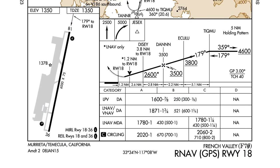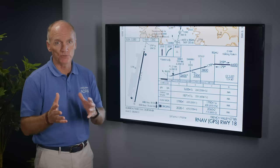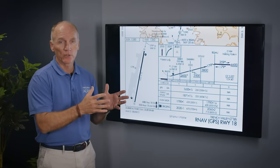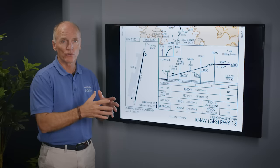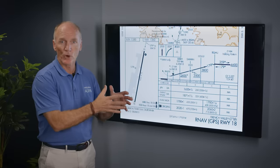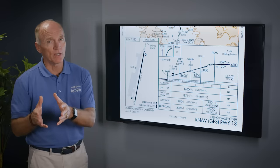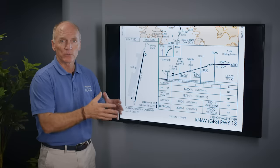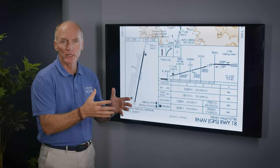According to reports from the media, the weather was reported as 300 and a half mile visibility going into French Valley. Now it depends on what kind of rules the pilot was flying under. If he was flying under Part 135, it's illegal to attempt an approach without having the minimum weather needed for landing. But under Part 91, it's acceptable, it's legal to attempt an approach even though the weather is below the minimums.